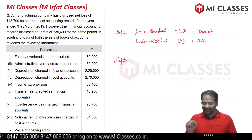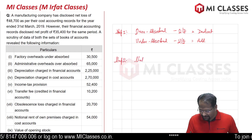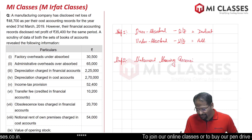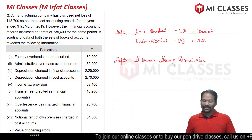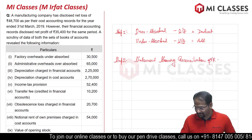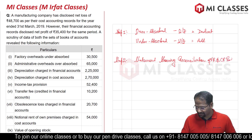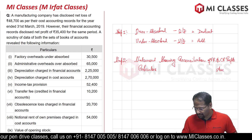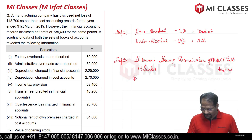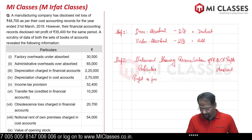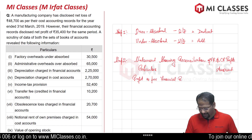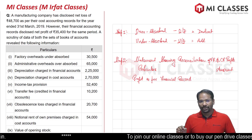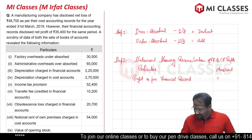Step two is creating our reconciliation statement. The heading is: 'Statement Showing Reconciliation of Financial Records Profit with Cost Records Profit.' We have two columns — particulars and amount. First, we write profit as per financial records. In case it is a loss, write the amount in brackets. The profit as per financial records is 35,400 rupees.